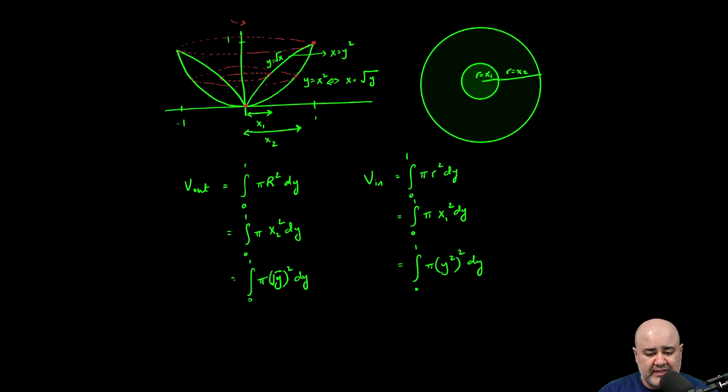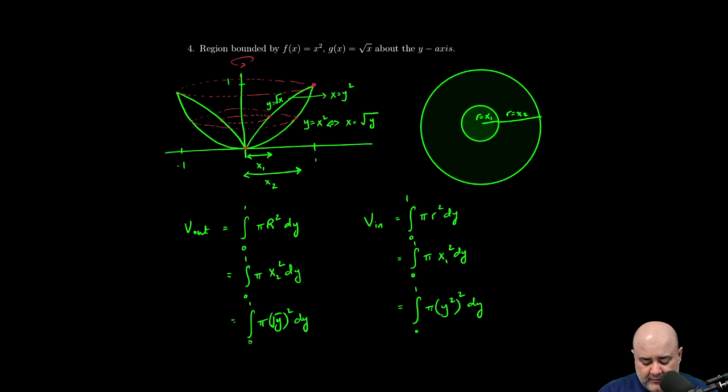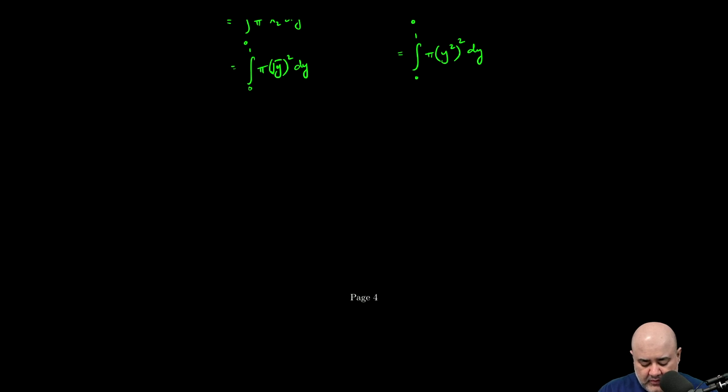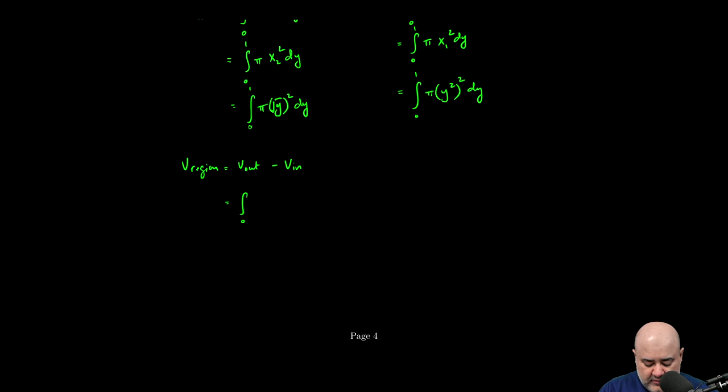Both these functions can, both these integrals can be found, and the volume of the walls or the volume of the region that we really need is the volume of the outside minus the volume of the inside, which will be the integral from zero to one pi times, I'm going to write it slightly differently, you'll see y in a moment, minus the integral from zero to one of pi times y squared squared with respect to y.